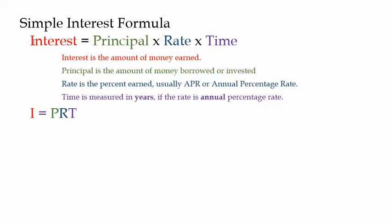Interest, if you're investing money, is the money that you earn, and the principal would be the money that you invested. If you're borrowing money, then principal is the amount you borrowed, and interest is the amount you have to pay. So it works in both directions.